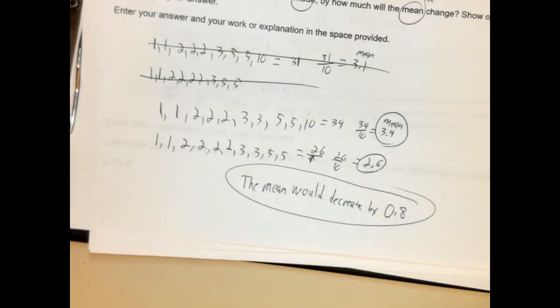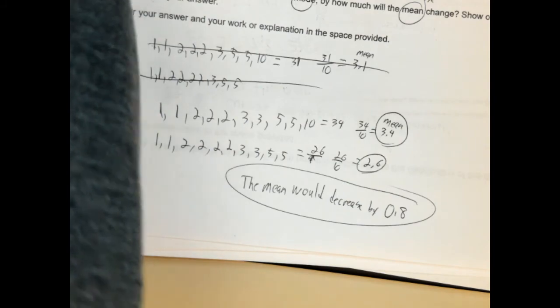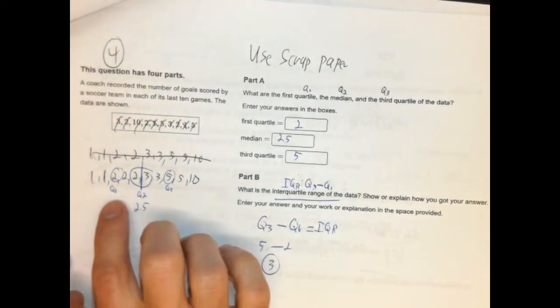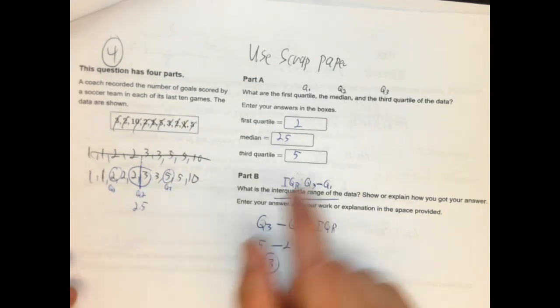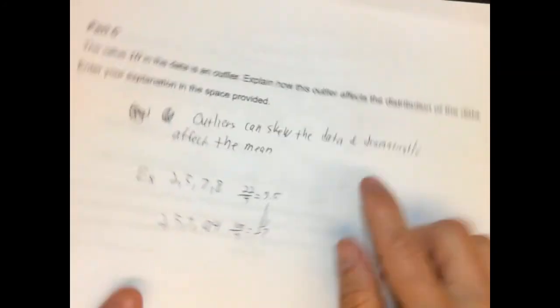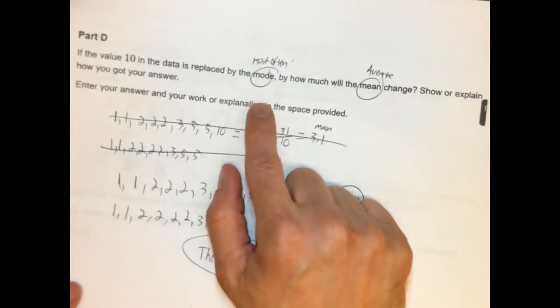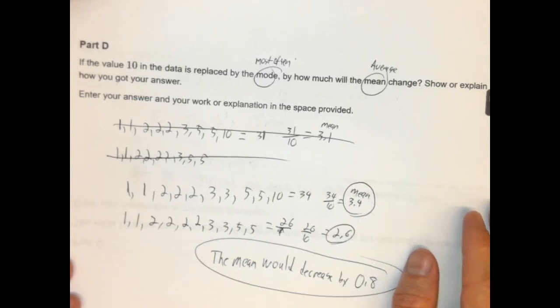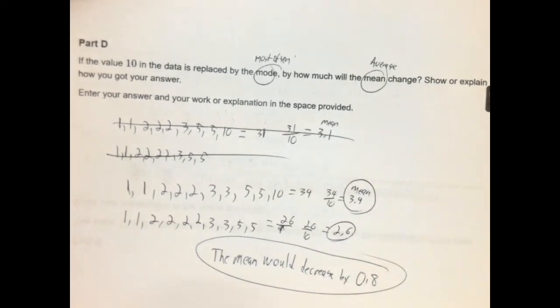So this problem was not scored as part of the practice test, but it shows we're expected to remember a few things: how to calculate the IQR, how to find Q1, Q2, and Q3, what a median is, how outliers work and what they mean, and what a mode is and how a mean is calculated. It's a fairly good amount of information for one problem. Hopefully this clarifies it — let me know if you have any questions.